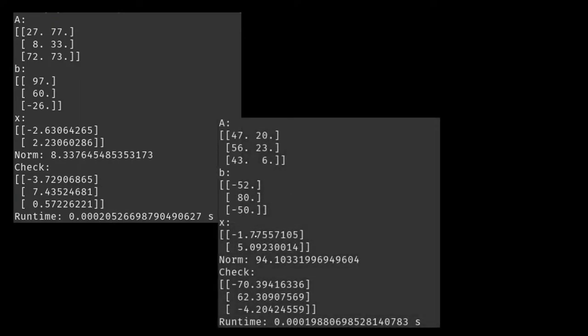Running this again, now we have a vector norm of 94. Here's our least squares solution, and you can see that with our check, we are very far off on two of our dimensions, but our third dimension is only negative 4.20 off, which, all things considered for an approximation, isn't particularly terrible.